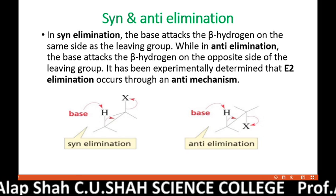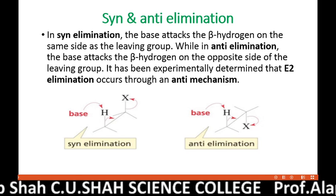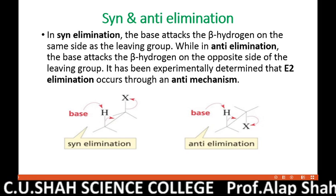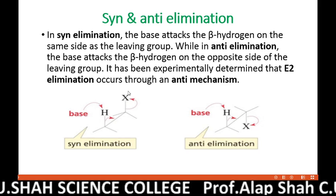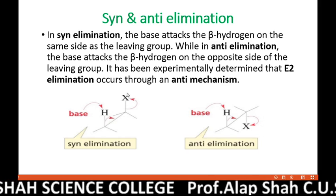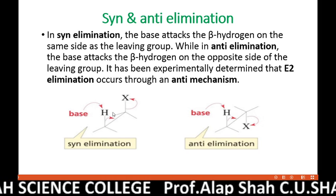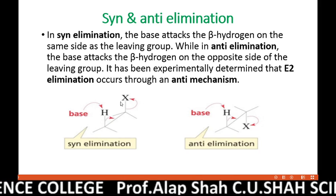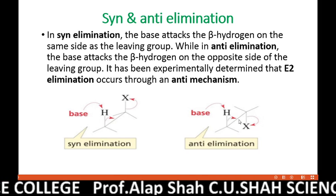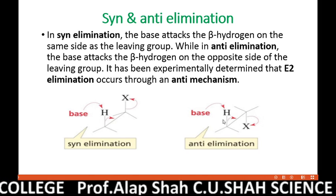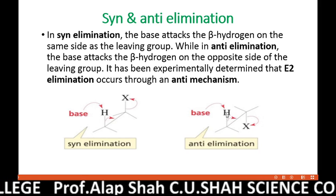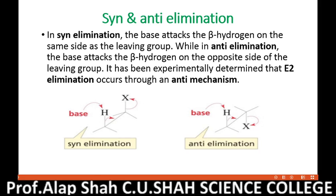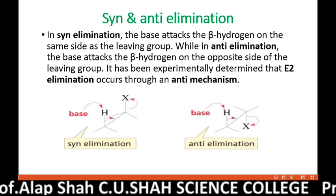E2 reaction may occur according to two different mechanisms: syn elimination and anti-elimination. In syn elimination, the leaving group and its beta hydrogen are eliminated from the same side and are coplanar. In anti-elimination, the leaving group and its beta hydrogen lie on opposite sides.